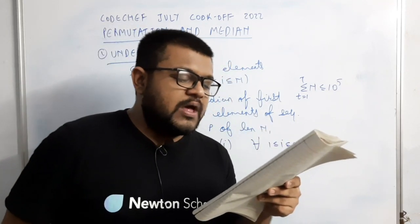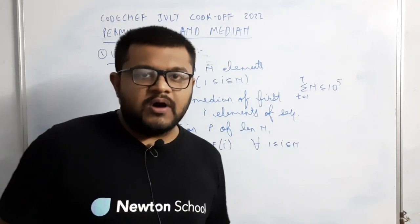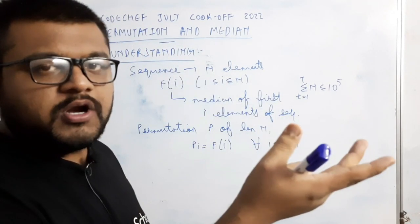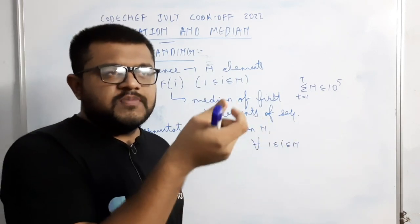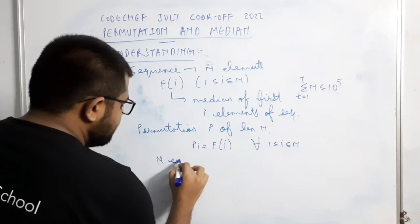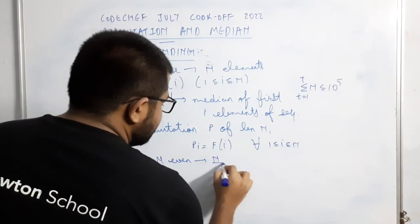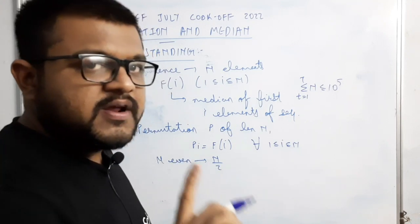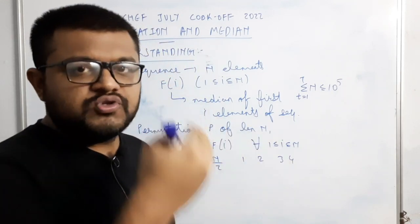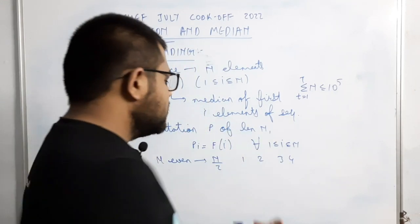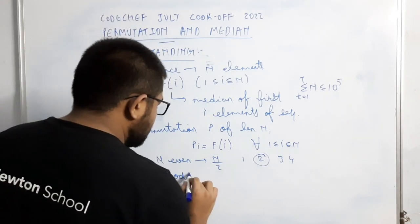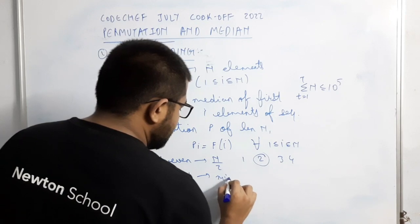Agar n ki value even hai, toh n/2 position wala jo element hoga usko median consider karenge. Pehle toh median ka matlab kya hota hai — ki agar hum array ko sorted order mein dekhein toh joh middle-most element hota hai woh hamara median hota hai. Toh agar n ki value even hai, toh n/2 position wala element median consider karna hai is question mein.